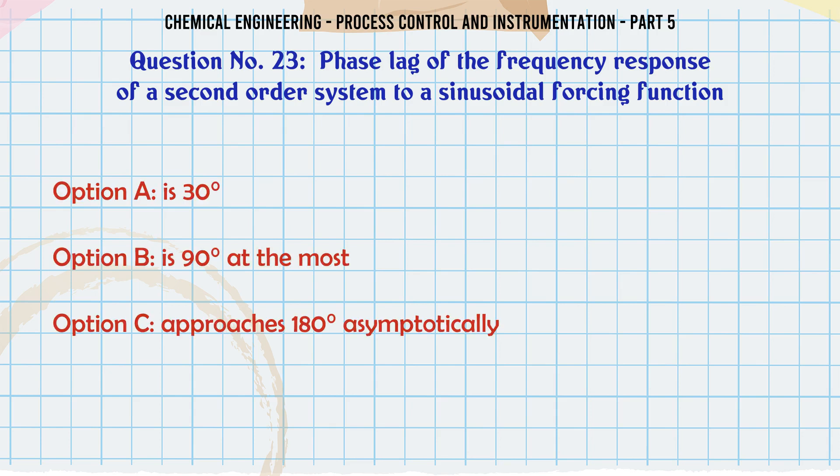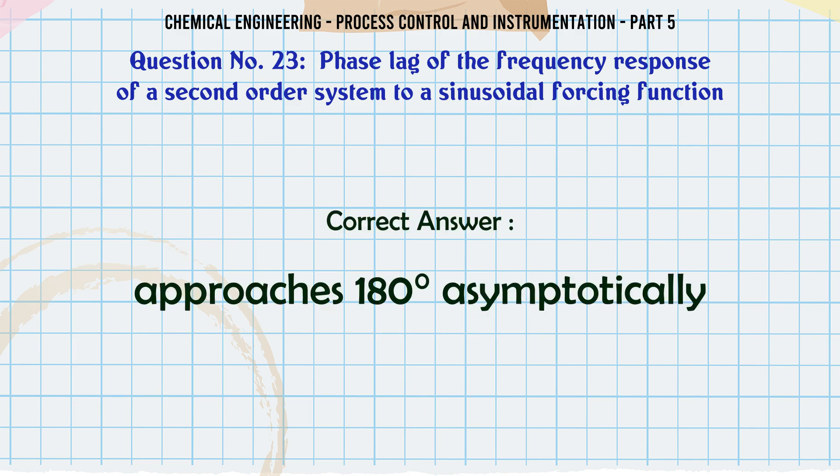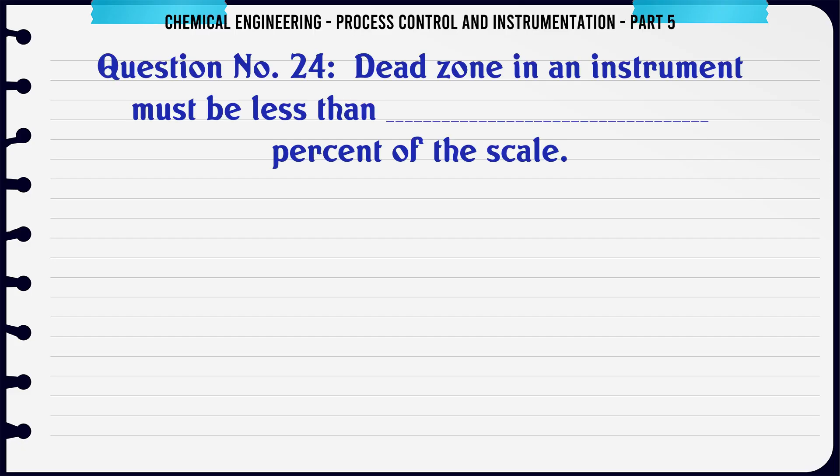Phase lag of the frequency response of a second order system to a sinusoidal forcing function: A. Is 30°. B. Is 90° at the most. C. Approaches 180° asymptotically. D. Is 120°. The correct answer is Approaches 180° asymptotically.